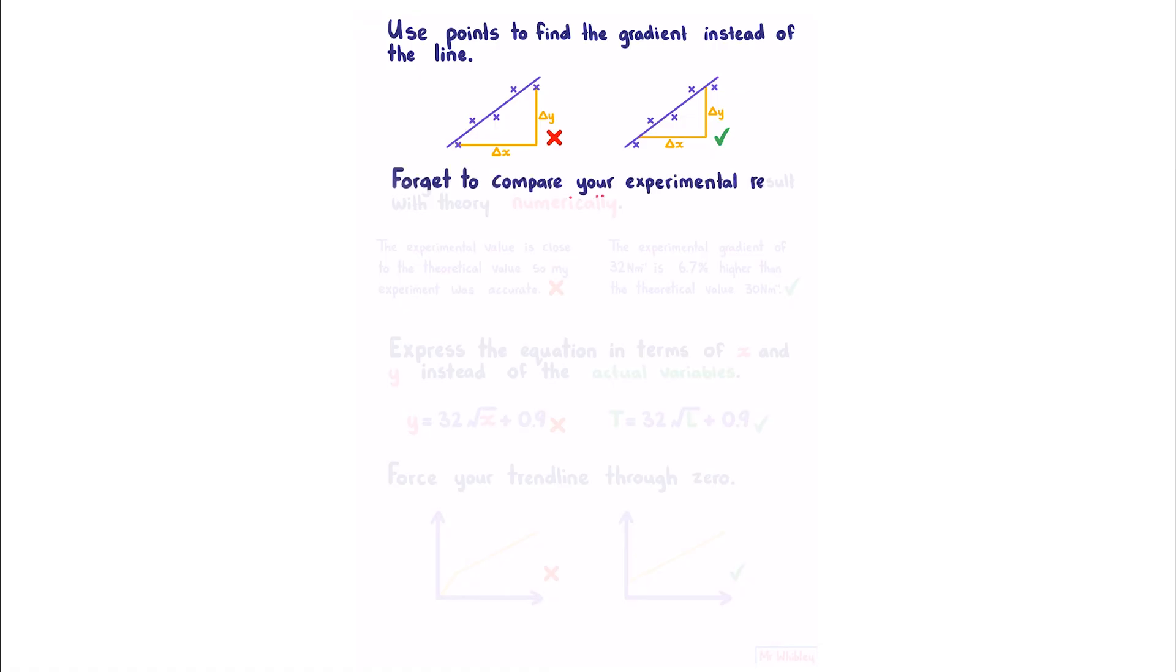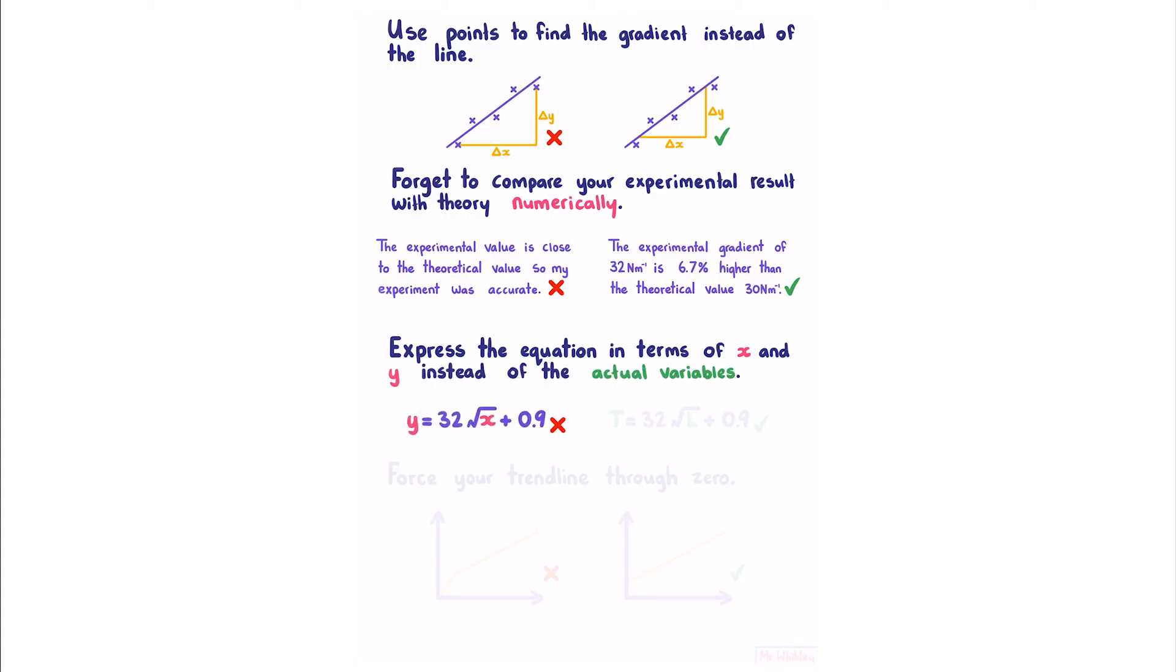Forgetting to compare your experimental result with theory numerically could cost you a merit or an excellence. So if you said the experimental value is close to the theoretical value, so my experiment was accurate, this is not enough. Instead, you should say something like the experimental gradient of 32 newtons per meter is 6.7% higher than the theoretical value 30 newtons per meter. You should not express the equation in terms of x and y instead of the actual variables. So don't do this. Instead, do this.